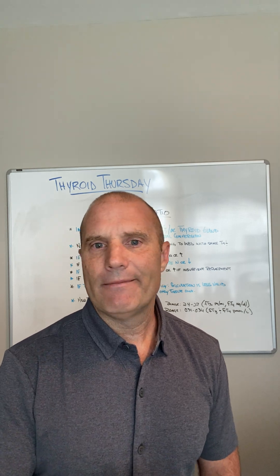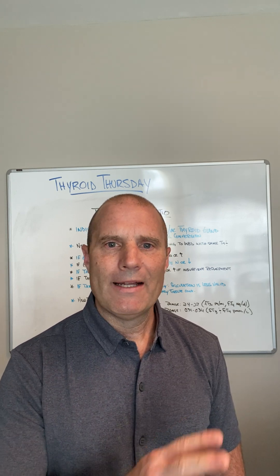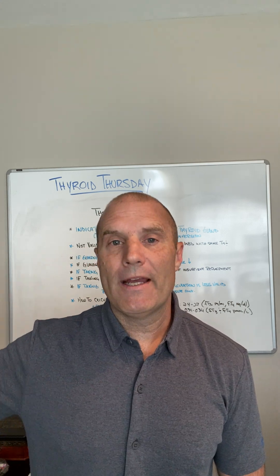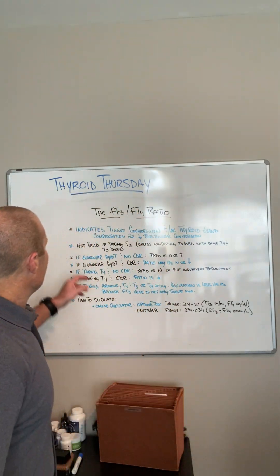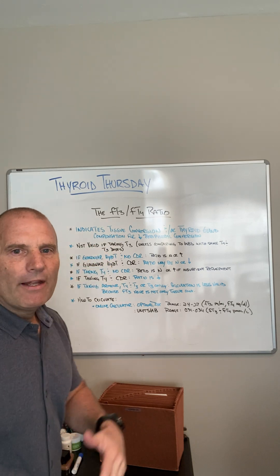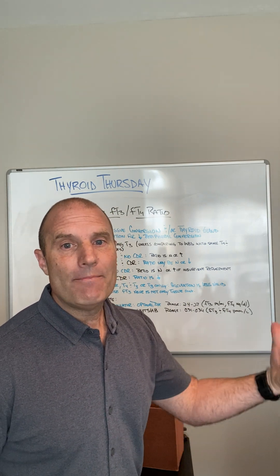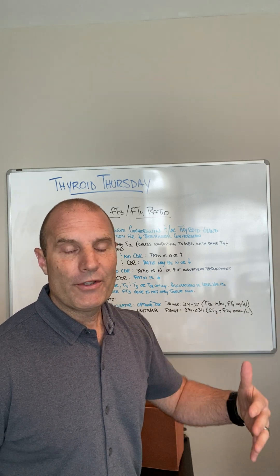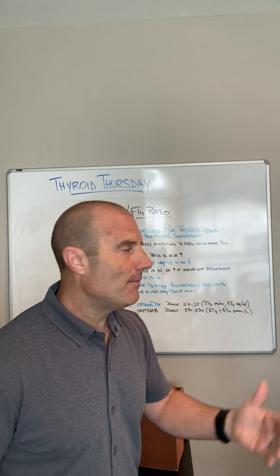I really like this free T3 to free T4 ratio better than looking at reverse T3 and the T3-to-reverse-T3 ratios. I prefer it, along with confirming tissue hypothyroidism by looking at the rest of the blood panel. Keep in mind that if you're taking T3 medication, it's going to skew the value, because you're not measuring only what the thyroid gland compensated with or what the peripheral tissues are making — you're measuring what you're giving. So that ratio is flawed in that context.